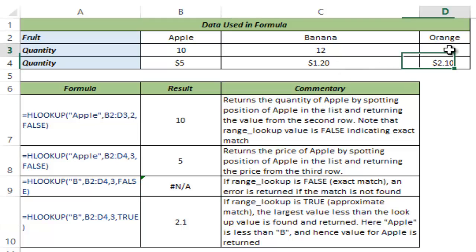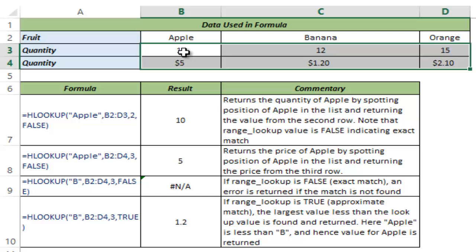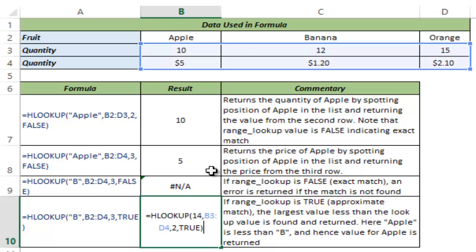I hit enter and this gives me 1.2. The reason is that now this top row is sorted in an ascending order and then it is looking for 14. So it goes here. This is less than 14. So it jumps up. It goes here. It again sees that this is less than 14.